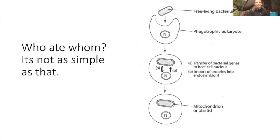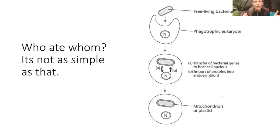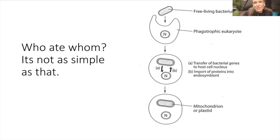You can think of endosymbiotic theory as 'who ate whom,' but it's not so simple. The basic cartoony version is you've got this phagotrophic, heterotrophic eukaryote with no cell wall - like an amoeba - oozing around. It comes across a free-living photosynthetic bacteria, or non-photosynthetic bacteria in the case of mitochondria, and it eats it. But the ones that don't fully get digested tend to have more benefits. So over generations, because of horizontal gene transfer, bacterial genes get transferred to the nucleus, and it becomes an exchange of products and genes between the nucleus and the new cell.